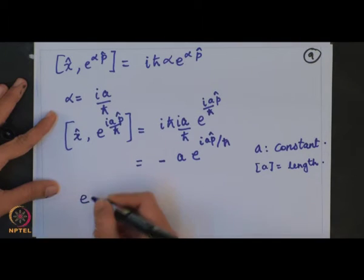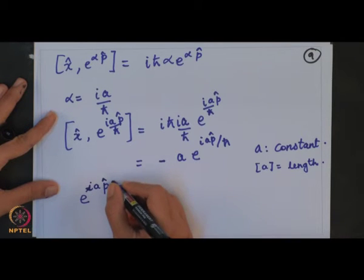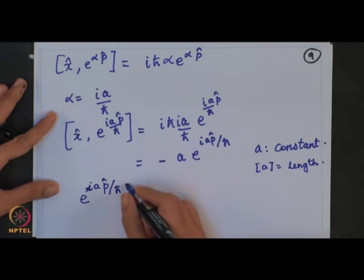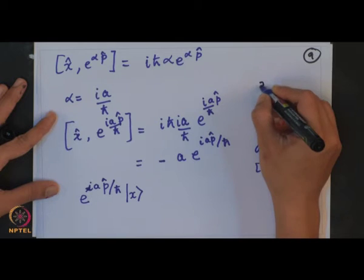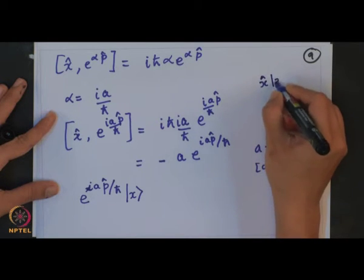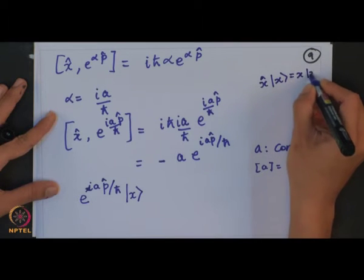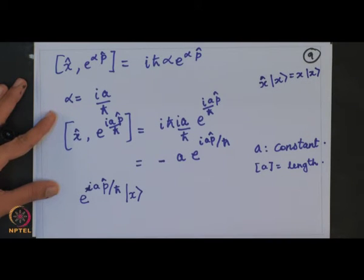Now the second part of the question is to show that |x⟩ is an eigenstate of the operator e^(iap̂/ℏ). I operate e^(iap̂/ℏ) on |x⟩. So when I operate x̂ on |x⟩ I obtain x times |x⟩ — so |x⟩ is an eigenstate of the position operator with eigenvalue x.